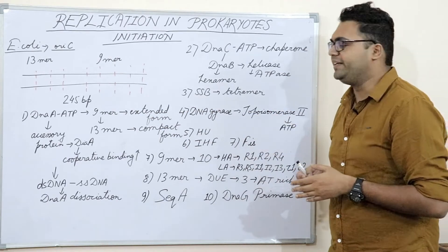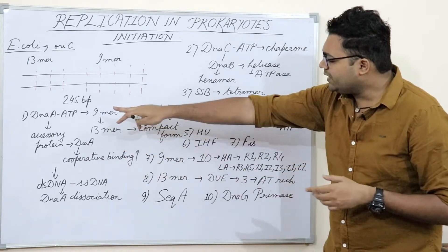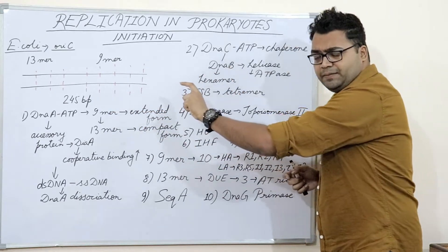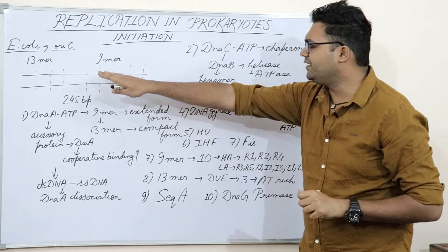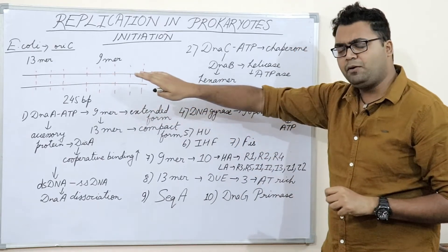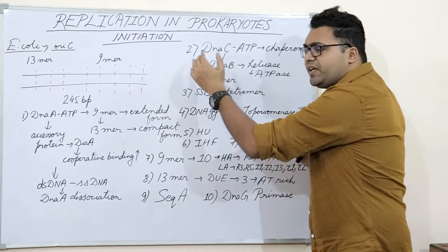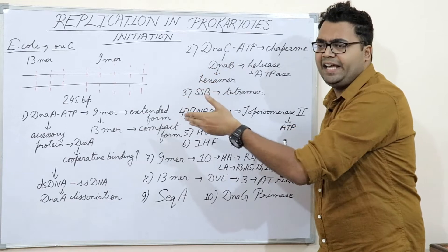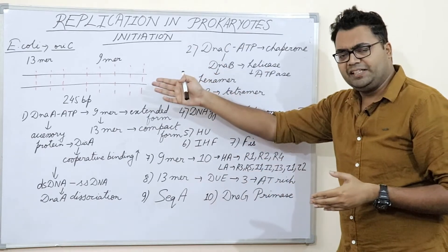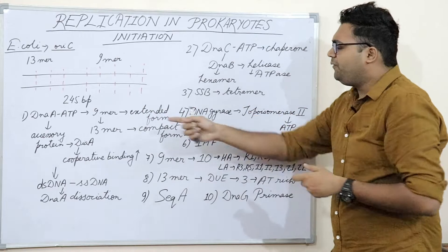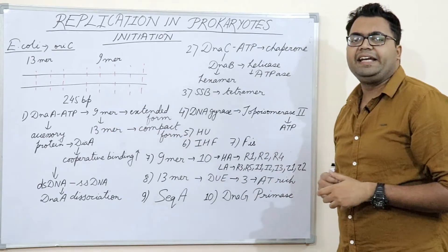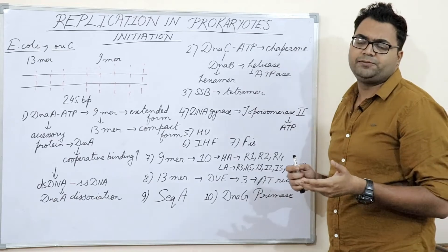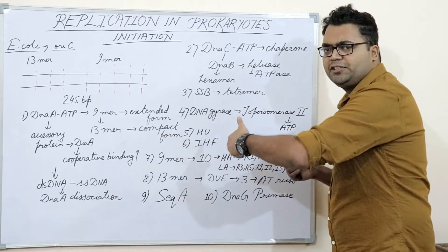DnaA-ATP recognizes the N6-methylation pattern on the E. coli DNA. The DNA must be completely methylated — a fully methylated sequence — for it to be recognized by the DnaA protein. Once it recognizes the sequence, it dissociates its ATP into ADP plus Pi plus energy by dissociation of the gamma phosphate bond.